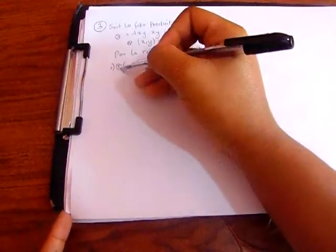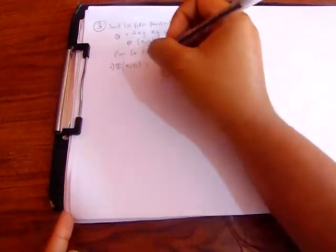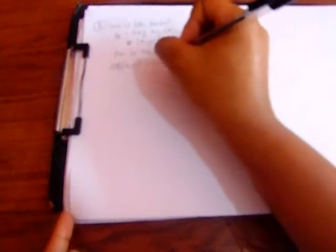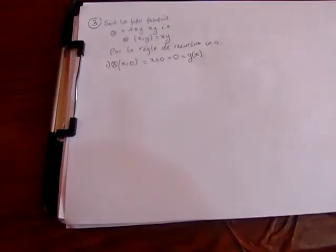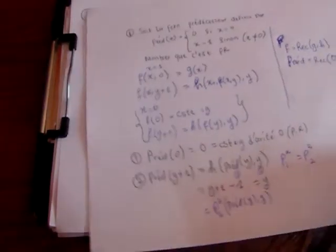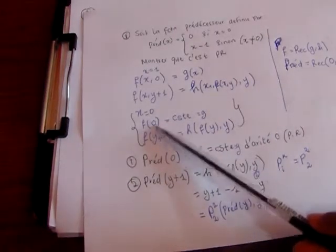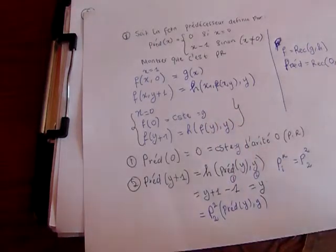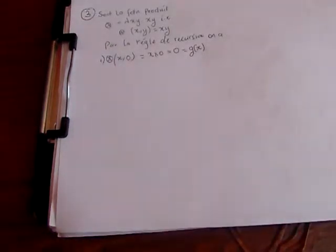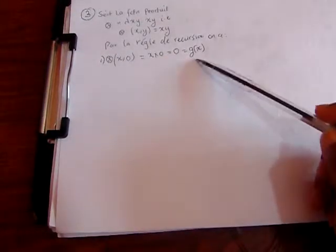Our function is multiplication, so we have x·0, which gives us 0 — so this is g of x. Now, what is our g of x? It's 0. But we can't say it's a constant, because the only time we can say it's a constant is if we don't even have x at all. In this case we already have x, so we can't say it's a constant just because it's 0 here.